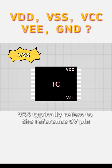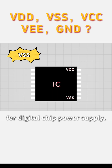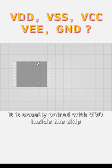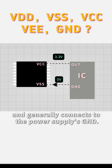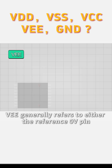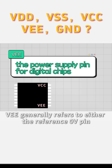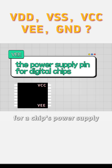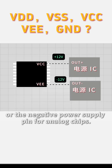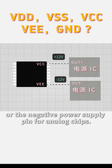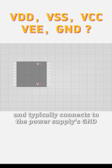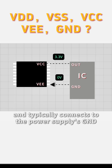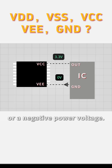VSS typically refers to the reference 0V pin for digital chip power supply. It is usually paired with VDD inside the chip and generally connects to the power supply's GND. VEE generally refers to either the reference 0V pin for a chip's power supply or the negative power supply pin for analog chips. It is often paired with VCC inside the chip and typically connects to the power supply's GND or a negative power voltage.